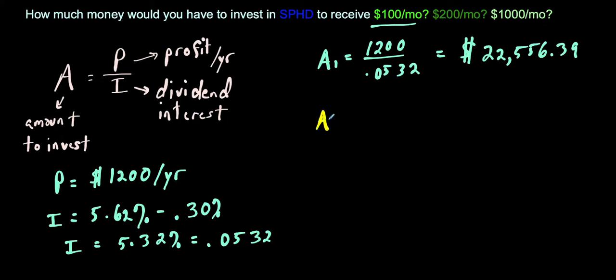Okay, so for the next amount, so now we're looking at for $200 a month, that means we're making $2,400 for the year. And we're dividing by the interest rate 0.0532. So the dollar amount we would have to invest for $200 a month would be $45,112.78.